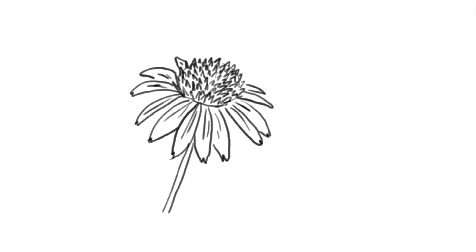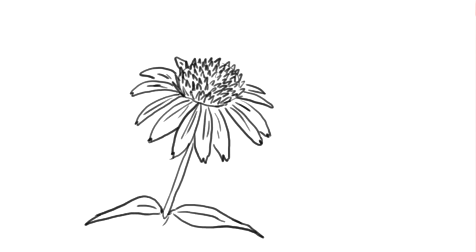Next, I drew the stem and the leaves. And after that, I added some color to the petals and tried to make it just the right shade of pink. Then I colored in the pistils — green on the bottom and orange on the top, just like I observed with my eyes. Finally, I added the color green to the stem and to the leaves.